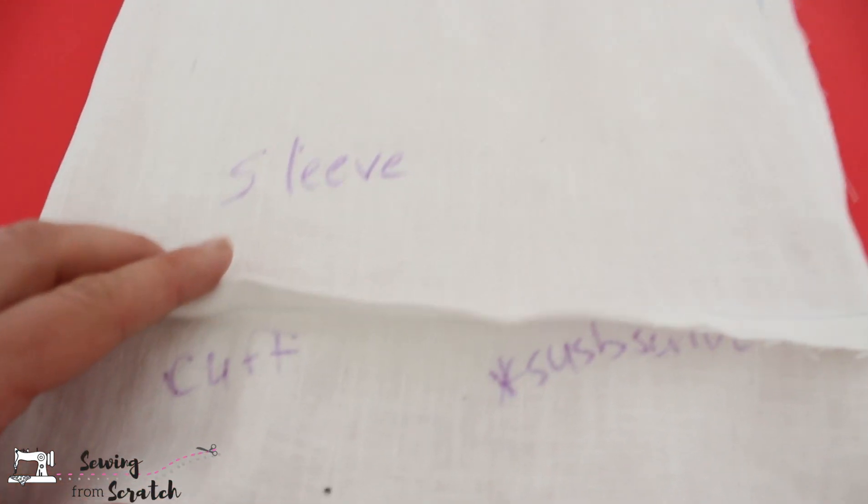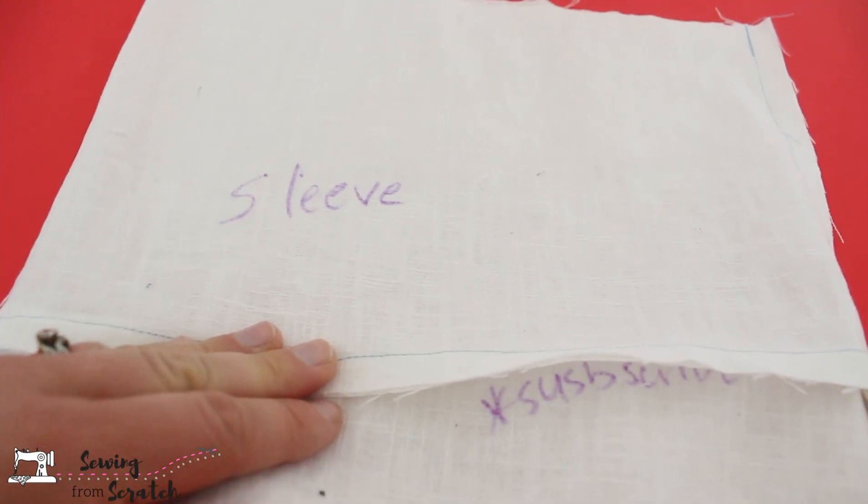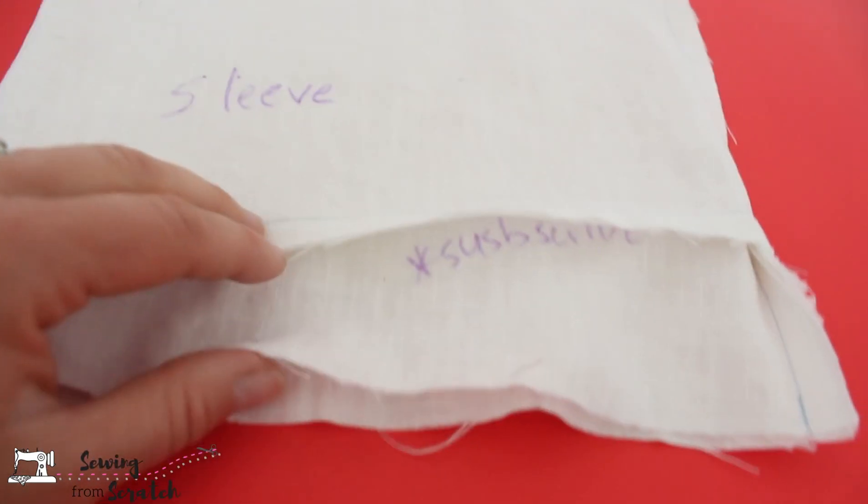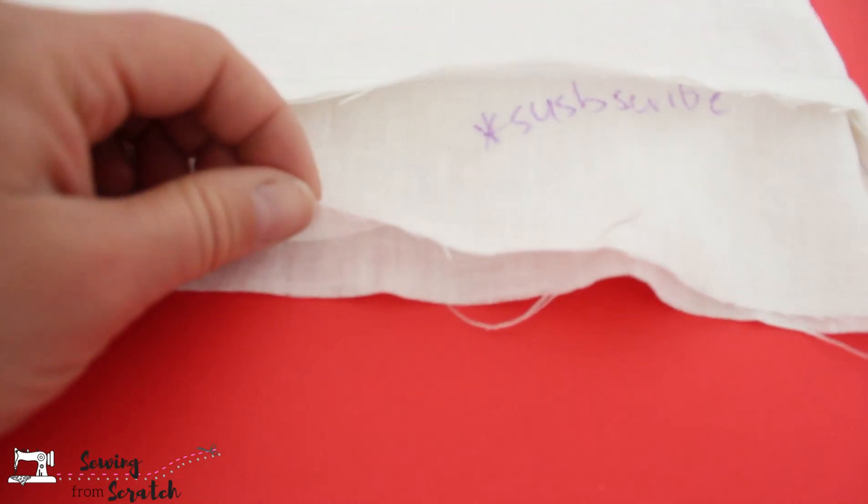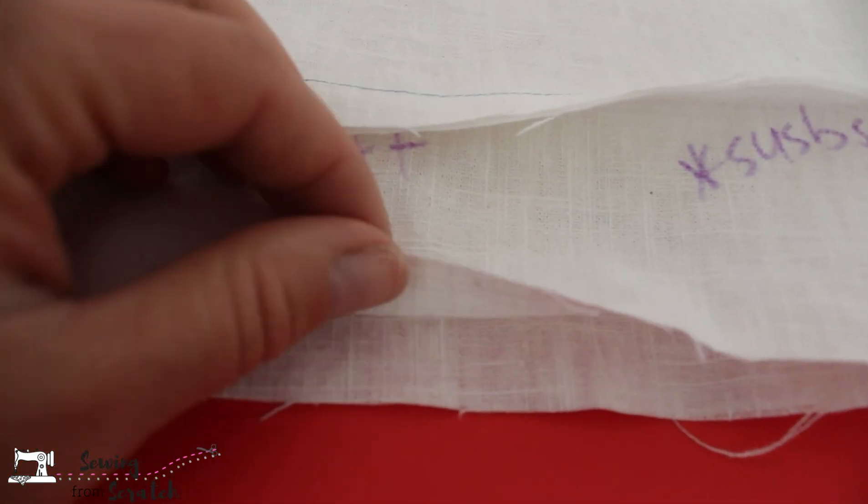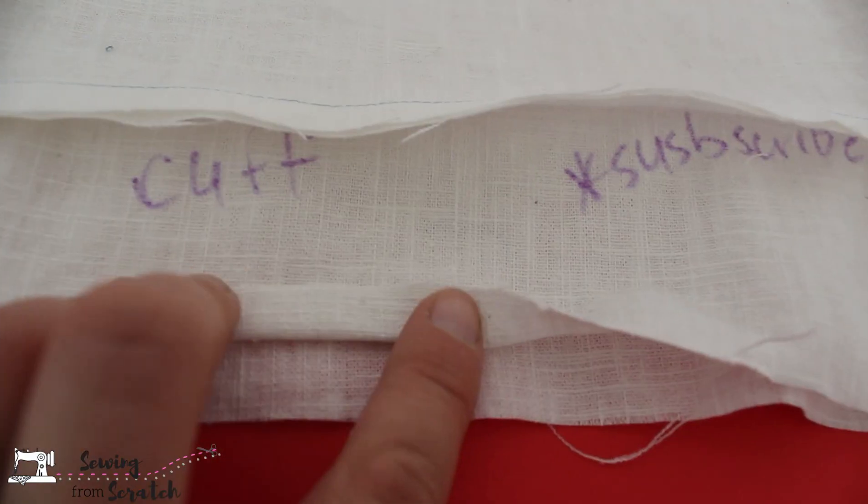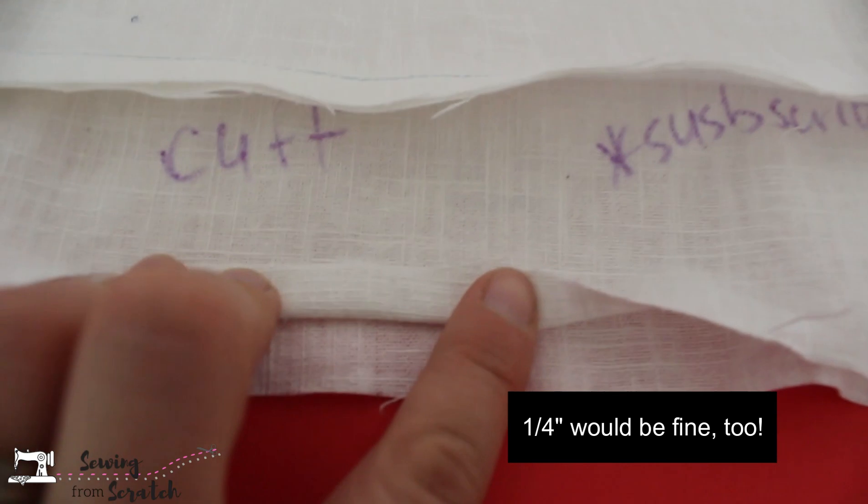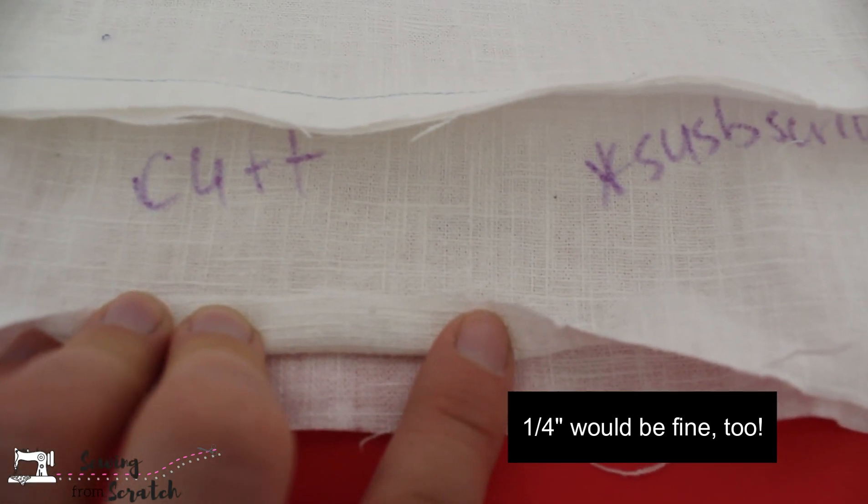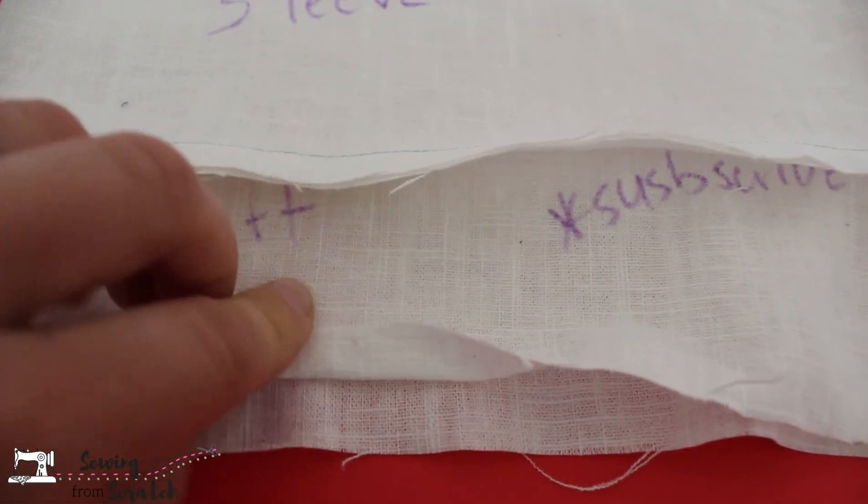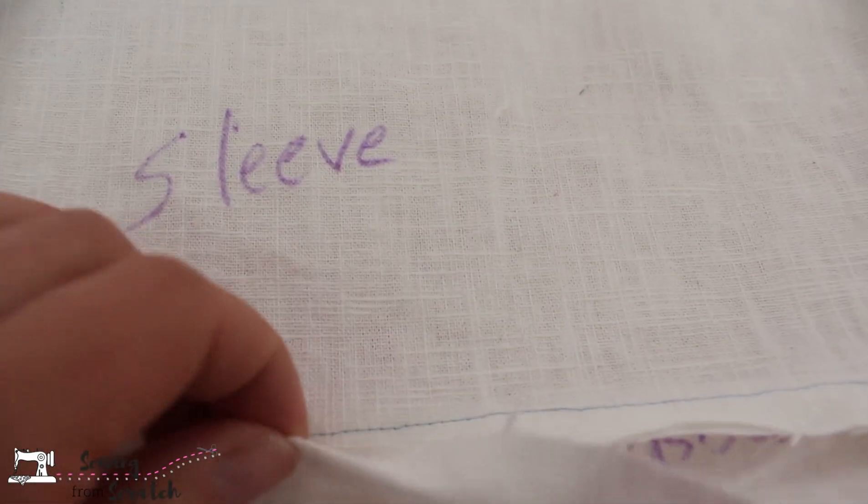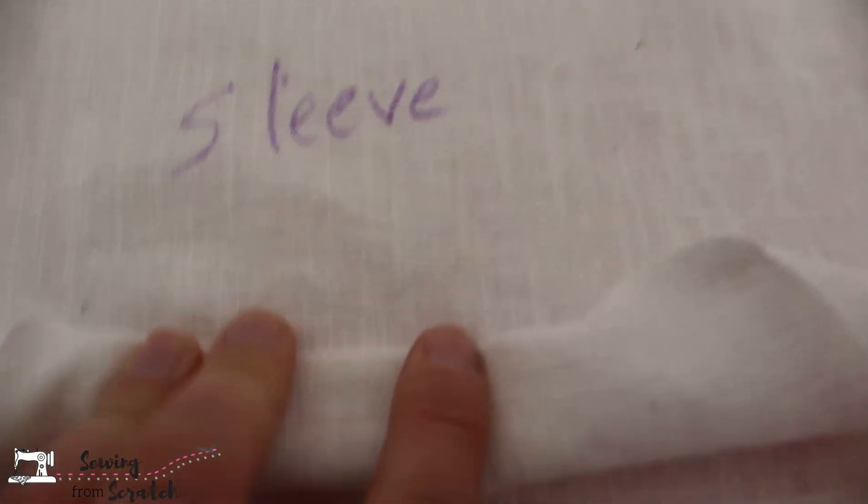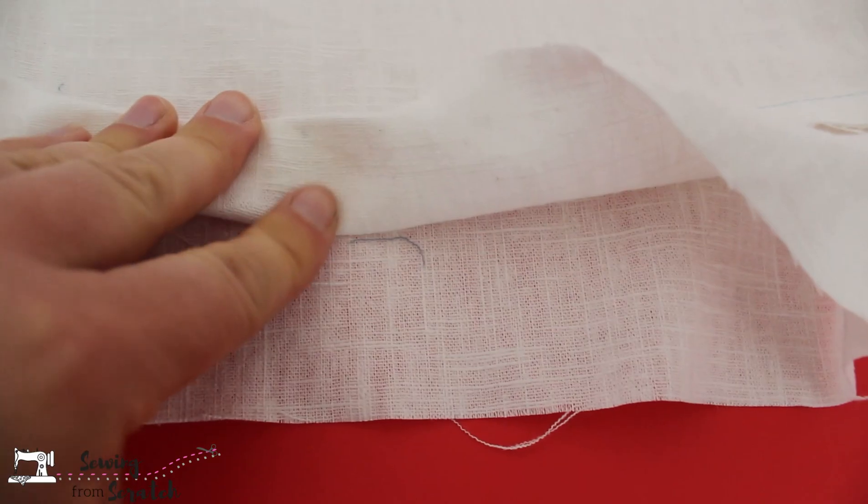So now the tricky-ish part—and you could have done this before, I probably should have told you to do this before—we're going to fold up the bottom raw edge of this cuff, and you want this to be equal to the amount of your seam allowance, so about half an inch. Then we're going to press that. Then we're going to fold it up to cover the seam allowance, just a touch, kind of where that stitching is. And then we're going to press it in half there.